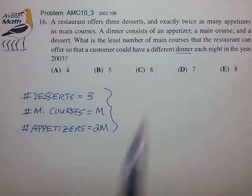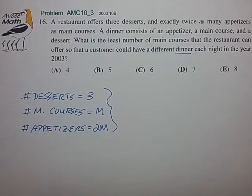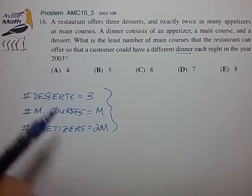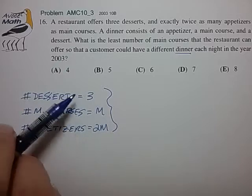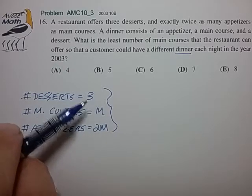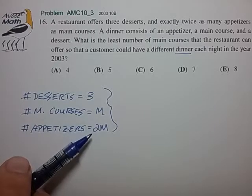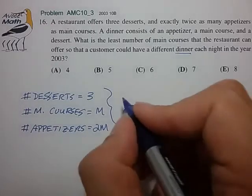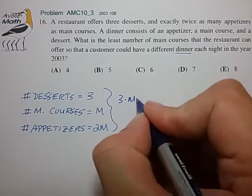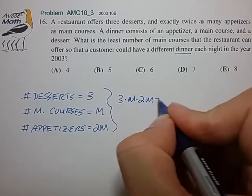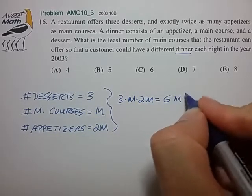And again because we've determined that these choices are independent and not connected we can calculate the total number of arrangements as being the number of choices for the desserts times the number of choices for the main course times the number of choices for the appetizers. So that equals three times M times two M which equals six M squared.